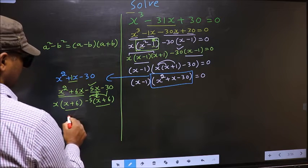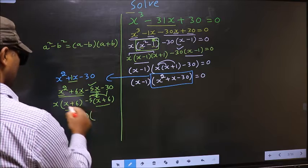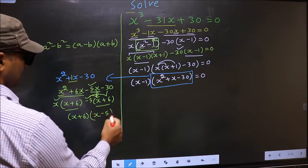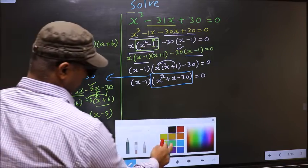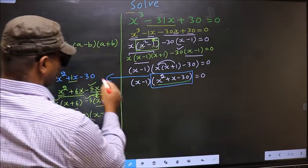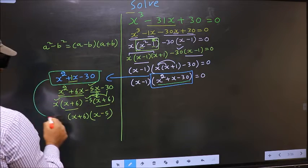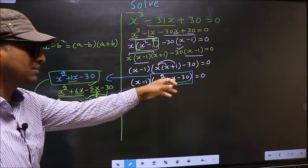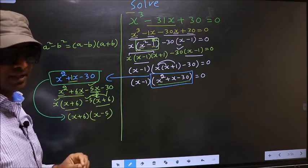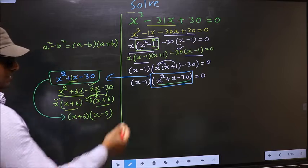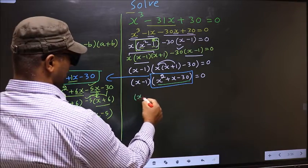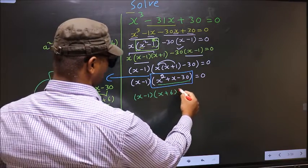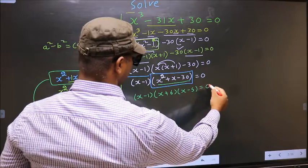Now you take out x plus 6 common. So here you have x and here minus 5. Now in place of this quadratic we should replace this. So this will become x minus 1, x plus 6, x minus 5 equal to 0.